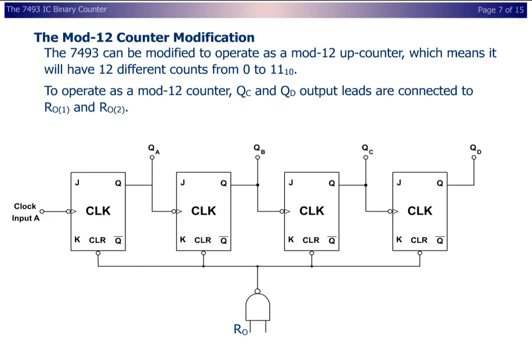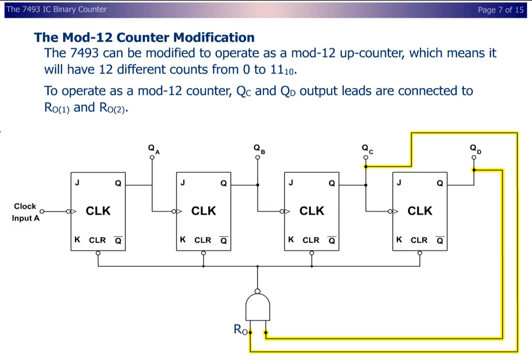The mod-12 counter modification. The 7493 IC can be modified to operate as a mod-12 up-counter, which means it will have 12 different counts from 0 to 11. To operate as a mod-12 counter, QC and QD output leads are connected to R01 and R02.